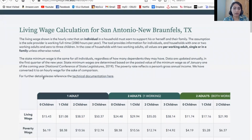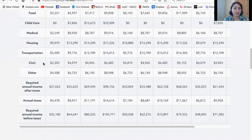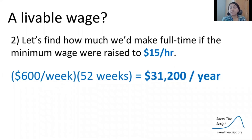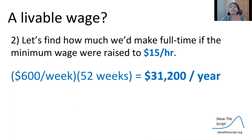We're going to look at one adult, zero children. Here are the typical expenses. We're going to go all the way down to the bottom where it says required annual income before taxes. So in San Antonio, Texas, it would take $32,100 to just be meeting the basic expenses for just an adult with no children. We saw that it would take a little over $32,000 a year to be meeting that livable wage level. So we just barely miss it with the $15 an hour minimum wage — we're just under at $31,200 — but we're certainly a lot closer than we were with the $7.25 per hour, more than double and just barely under that livable wage limit.